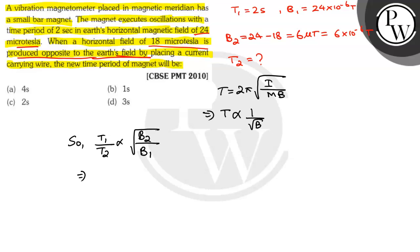So, T1 by T2 will be directly proportional to root under B2 by B1.